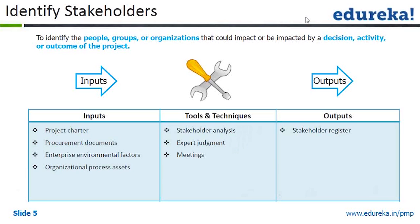We need to create a stakeholder register as a document for every project — it will have the names of all the people involved. Remember: when we are looking at stakeholder identification, we don't identify stakeholders just by designations. Stakeholder identification should be in terms of the actual name of the person.